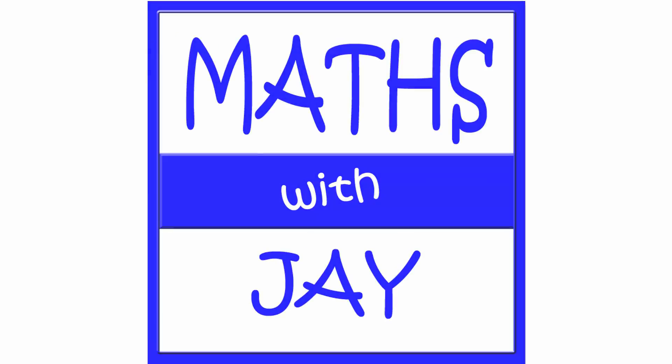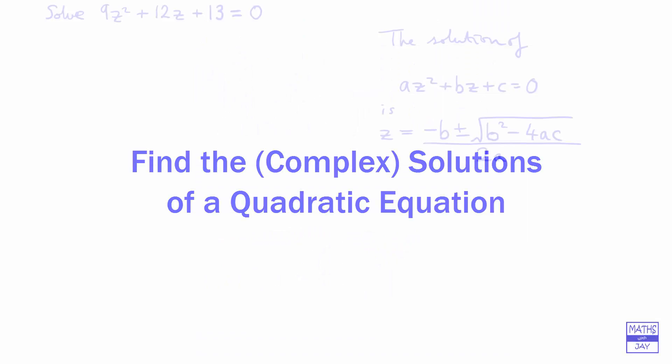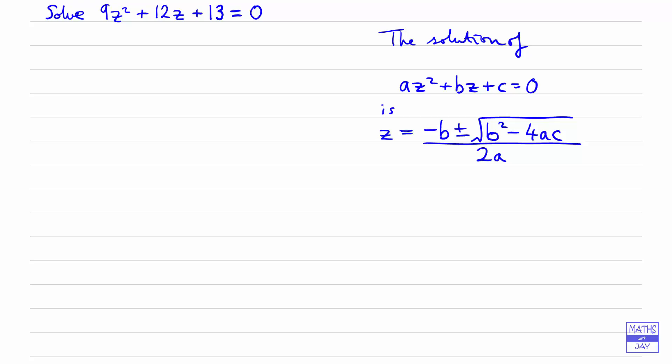Hello, welcome to Maths with Jay. We've got a quadratic equation here, and we've got the quadratic formula written down at the side. So we can see that a is 9, b is 12, and c is 13.